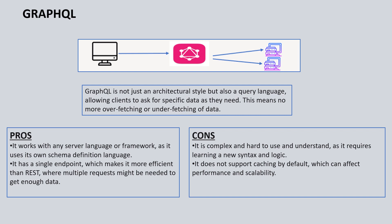The main benefit of GraphQL is that it works with any server language or framework because it has its own schema language. It also has a single endpoint, which makes it more efficient than REST, where we have to do multiple calls to get the required data. The main problem with GraphQL is that it has a very steep learning curve because it is complex and hard to use and understand. There is also no support for caching, so there is a performance hit. GraphQL is best used when your data model is complex and dynamic and you want to exactly fetch the data your application needs.